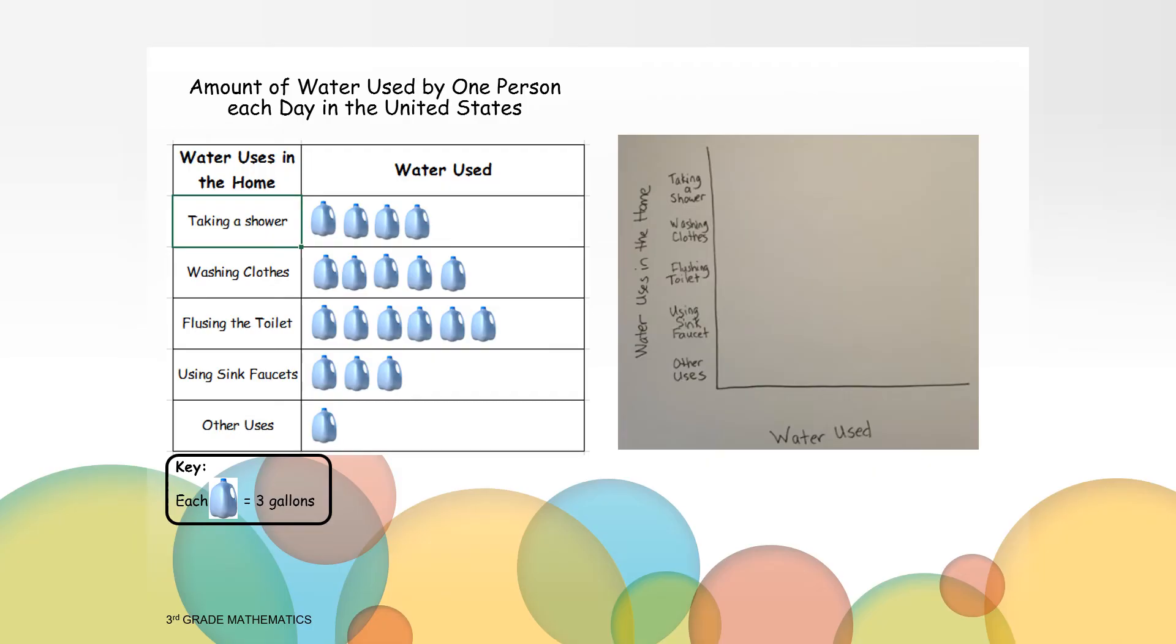What should we do next? Yes, we need to add the numbers to the X axis related to the amount of water used. You could write down all of the numbers 1 through 20. But since each picture in the pictograph represents three gallons of water, let's just write in multiples of 3.